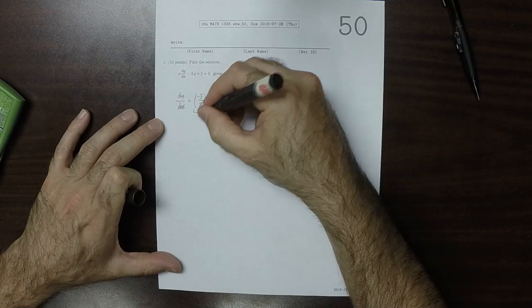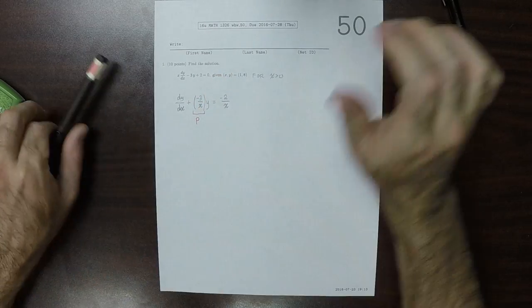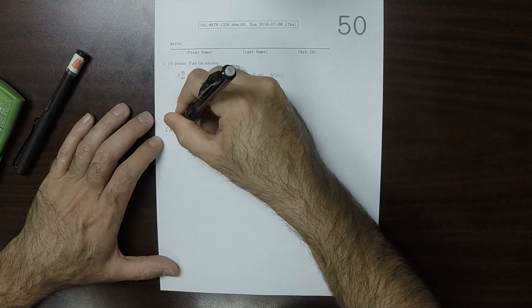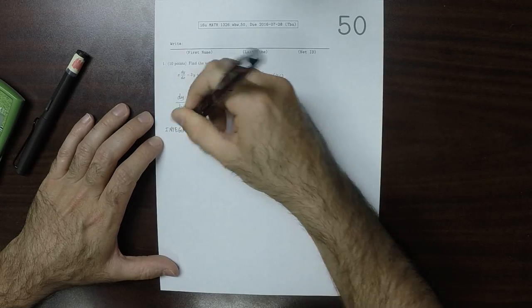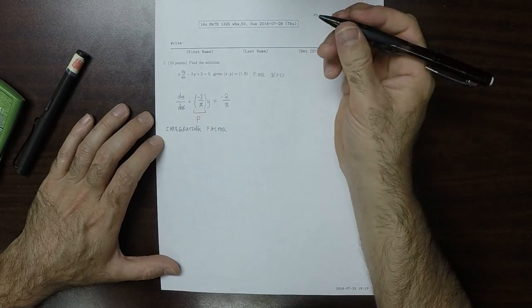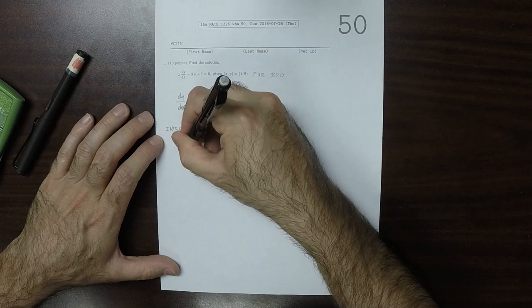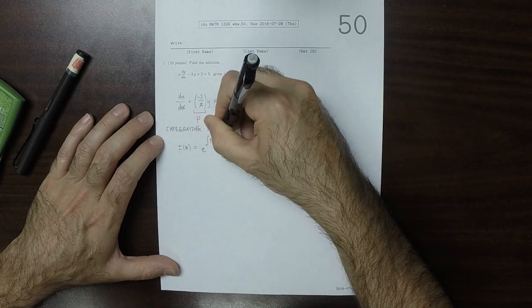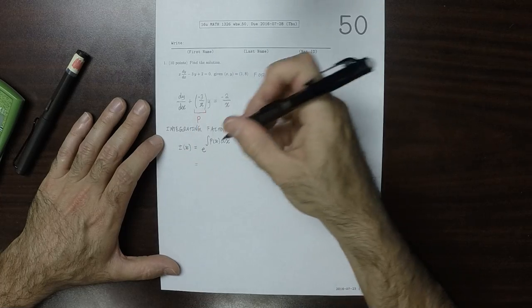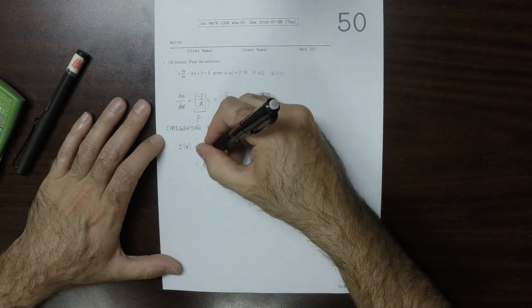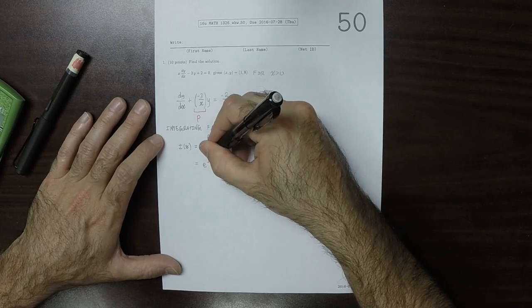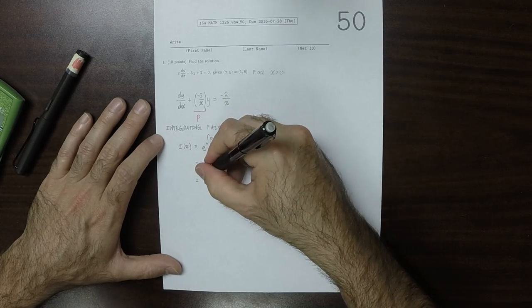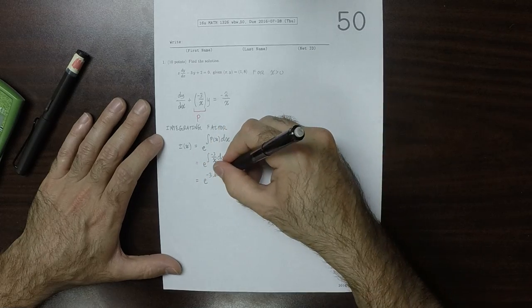This here is p in our first-order linear integrating factor terminology. The integrating factor i(x) is the exponential of the antiderivative of p(x) dx. This is the exponential of the antiderivative of negative 3 over x dx, which is exponential of negative 3 log absolute value of x.